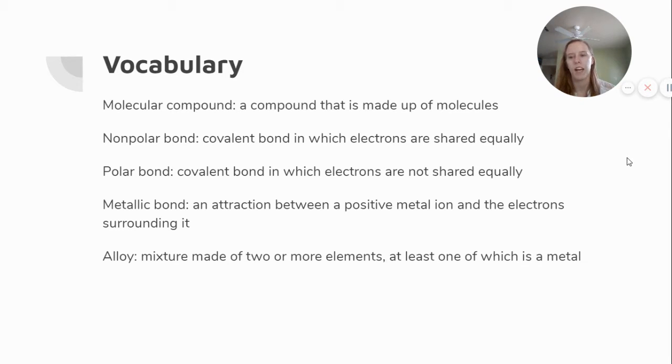On the opposite side, a polar bond is a covalent bond in which electrons are not shared equally. A metallic bond is an attraction between a positive metal ion and the electrons surrounding it. An alloy is a mixture made of two or more elements, at least one of which is a metal.